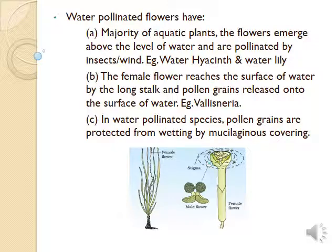Next, pollination in flowers by water mainly takes place in aquatic plants. For example, water hyacinth and water lily — these flowers come out of the water surface and are pollinated by wind or insects. In submerged plants like Vallisneria, the female flowers reach the surface of the water by a long stalk and pollen is released onto the surface of water. Here, pollen grains are covered by a mucilaginous covering; otherwise, these pollen grains would decay in water.